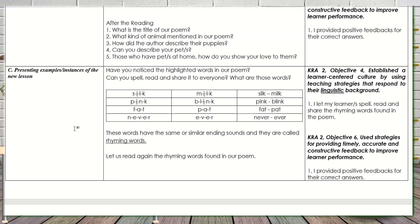In Letter C — presenting examples or instances of the new lesson — I asked: 'Have you noticed highlighted words in our poem? Can you spell, read, and share them with everyone?' When they answered, they first spelled out the words, so they also practiced the sounds of the letters. This touched CRA 2, Objective 4 — establishing a learner-centered culture by using teaching strategies that respond to their linguistic background — which is all about language and words.